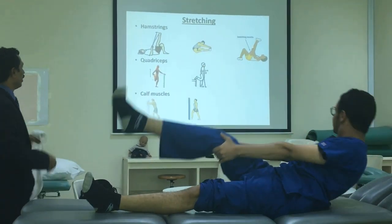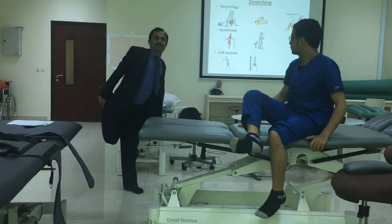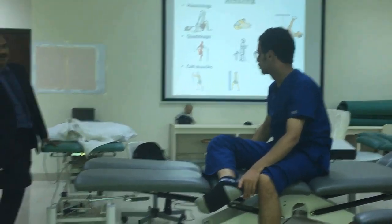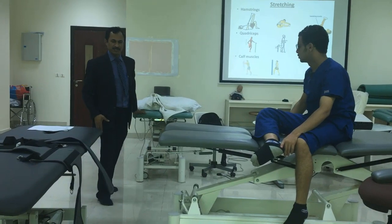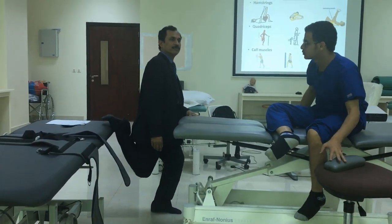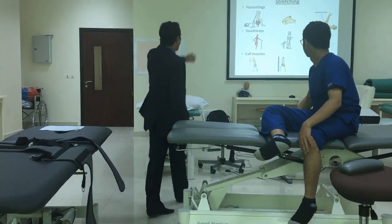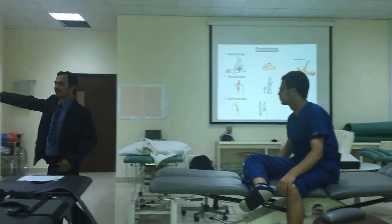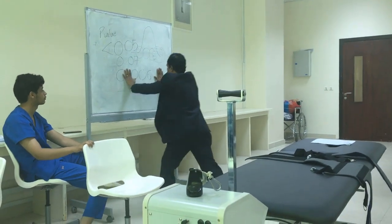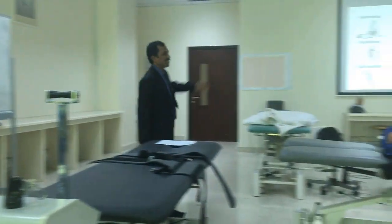Number four: quadriceps stretching - like this. Number five: one more quadriceps stretch - keeping the leg here and lowering it down. Then calf muscles, gastrocnemius stretch - going forward and down. These are the stretching exercises.